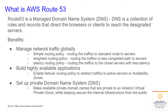The main benefits of Route 53 are that it can manage network traffic globally, and it has a couple different options for this. Simple routing policy allows for routing the traffic to the standard route to servers. Weighted routing policy allows a user to assign weight to a specific server, so you can assign more weight to one server or less weight to another, and this allows for routing traffic based on that weight. Latency routing policy routes the traffic to the closest server with the least amount of latency.